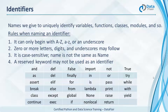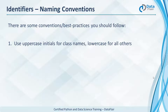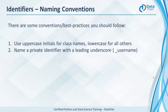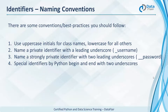Reserved keywords include 'and,' 'as,' 'assert,' 'break,' 'class,' and so on — we'll discuss all of these as we proceed. There are also naming conventions to follow: use uppercase initials for class names and lowercase for everything else. Private identifiers should have a leading underscore, like '_username.' Strongly private identifiers use two leading underscores, like '__password.' Python also has special identifiers that both begin and end with two underscores, which we'll discuss in a separate lecture.